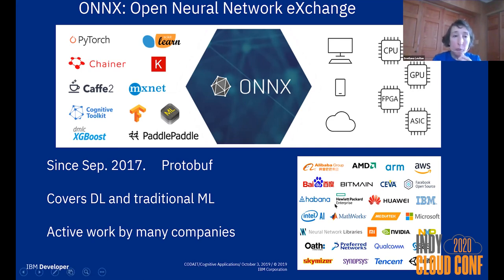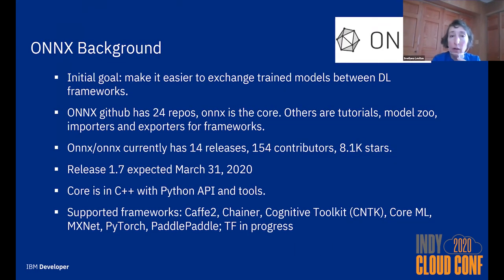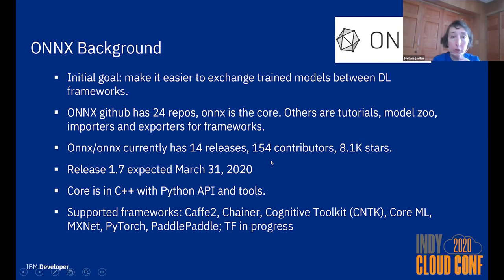Many people, especially those working on IoT applications, report using ONNX in production because it enables much more efficient deployment of visual recognition and other deep learning models. ONNX also added support for traditional machine learning, though in my opinion it is way less comprehensive than what PMML has. There is active work by many companies: release 1.7 is expected in a couple of days, the project has more than 8,000 stars on GitHub, and there are many open issues — if you have free time, please go to the ONNX website and start contributing.